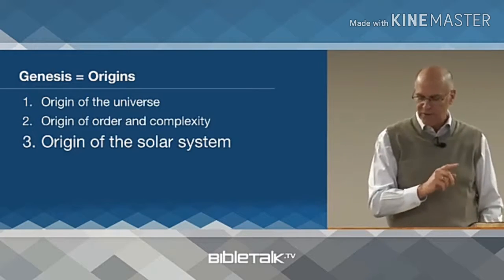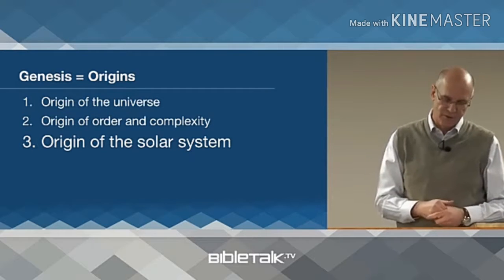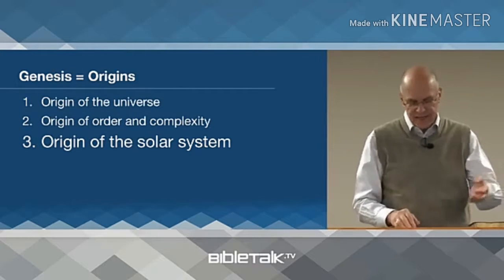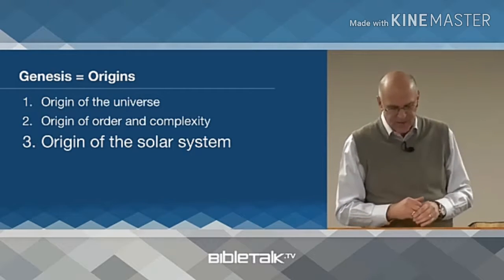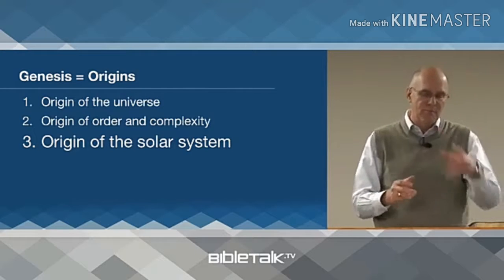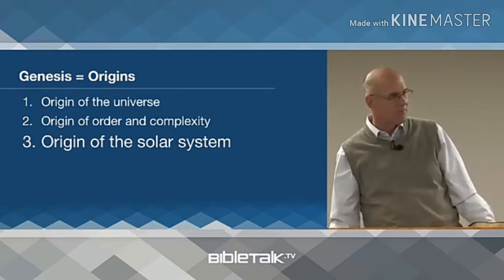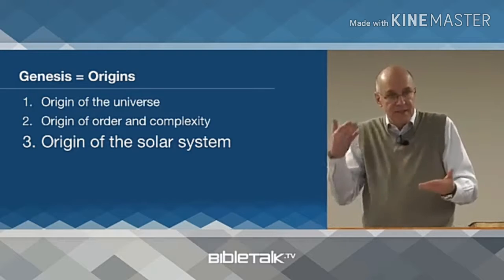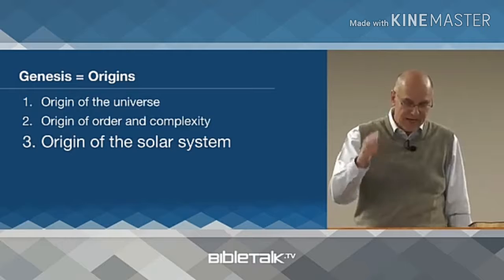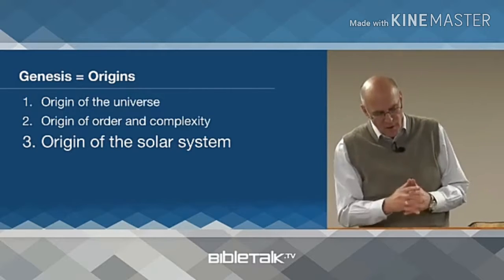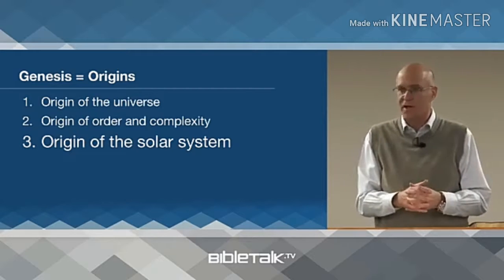Number three: Genesis gives us the origin of the solar system. Science can count and study the stars, but science has not found a satisfactory explanation for the beginning of the stars. The latest theory they've come up with is the Big Bang. That's the latest theory — it all started with a Big Bang.